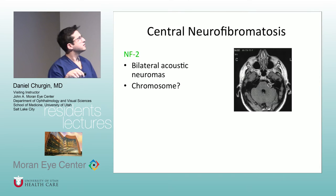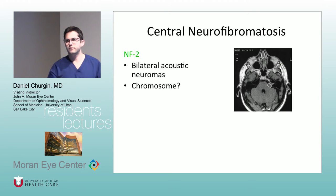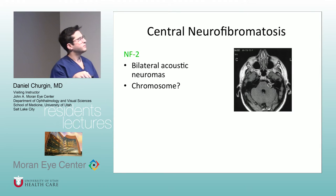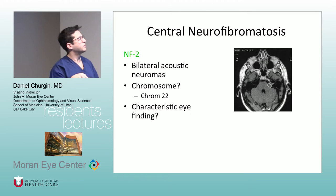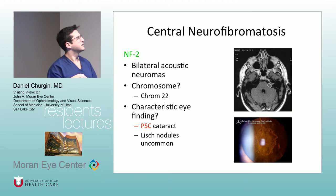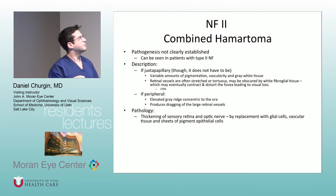NF2 has another name — it's something descriptive, like multiple schwannoma — it's a very long name. Look up the other name they can throw out for NF2. They get bilateral acoustic neuromas, chromosome 22 — easy to remember because there's a two in the name. They get PSC cataracts, and Lisch nodules are uncommon. So the key thing to remember about NF2 is that they get PSC cataracts. They also get combined hamartomas, which can be juxtapapillary or peripheral — it's an elevated gray ridge of tissue. ERMs over them are frequent, and they can be visually significant. They can also develop neovascularization.